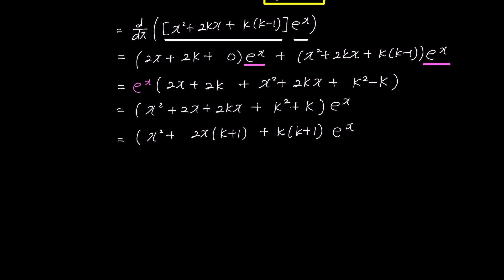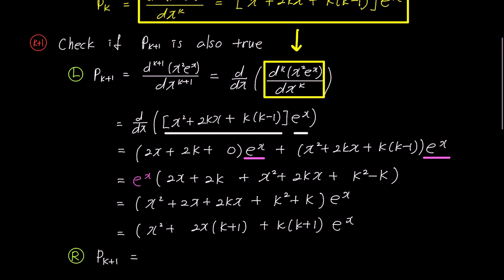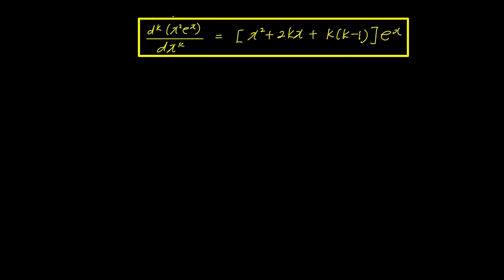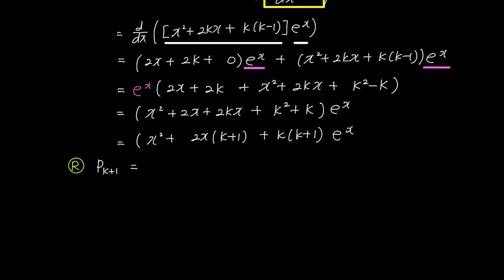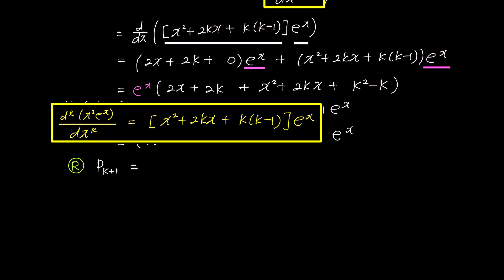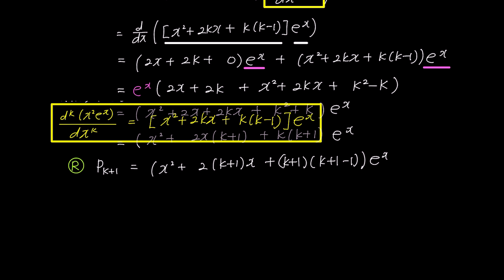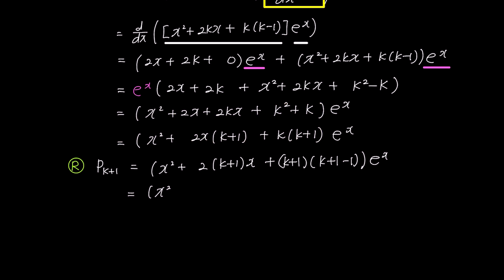Now that we have found the left side of P(k plus 1), let's look for the right side of P(k plus 1) to compare the two. To find the right side of P(k plus 1), we revisit the P(k) expression written at the k step. Substituting k plus 1 for k in the right side of the formula in the yellow box, we obtain the right side of P(k plus 1): x squared plus 2 times (k plus 1) times x plus (k plus 1) times (k plus 1 minus 1) times e to the power of x. This simplifies to (x squared plus 2x(k plus 1) plus k(k plus 1)) times e to the power of x.